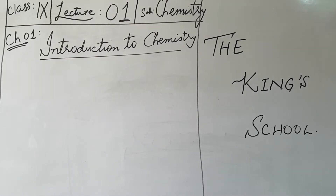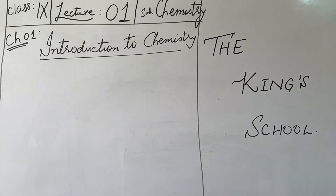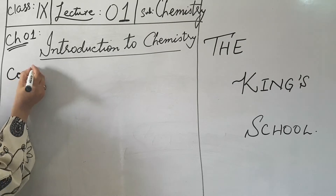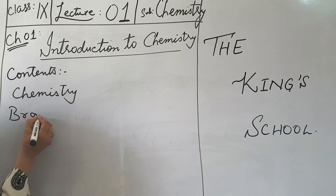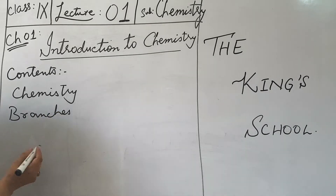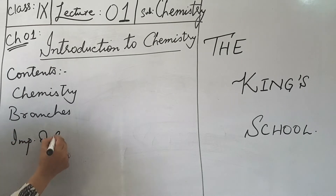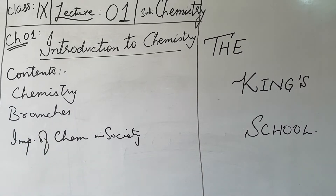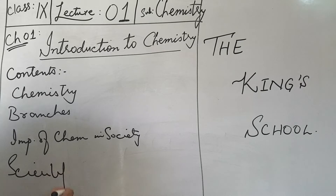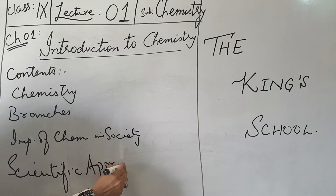Now we will move towards the studies. Your chemistry book is the state textbook. Today I am going to start Chapter 1, which is Introduction to Chemistry. In this chapter we will study the definition of chemistry, the branches of chemistry, the importance of chemistry in society, and the scientific approach in chemistry — which includes four things: observation, hypothesis, theory, and scientific law.